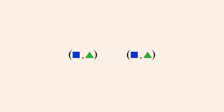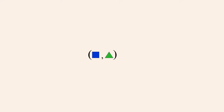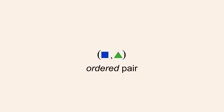This pair of elements forms an ordered pair — a single element created from the pair of operand elements. The order in which the elements of an ordered pair are listed is important. Unless two elements are the same, switching their order creates a different ordered pair. This is why the pair of elements is called ordered.